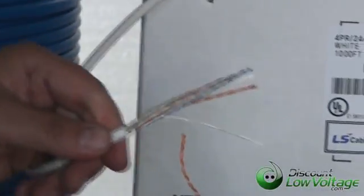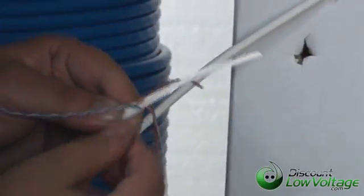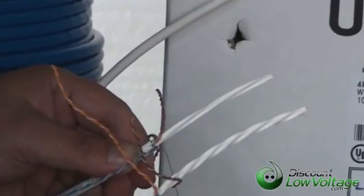So obviously the pairs aren't twisted around the center spline. They are twisted tighter than Category 5, and the center spline does have a little bit of a twist to it